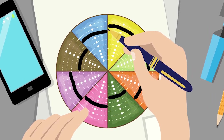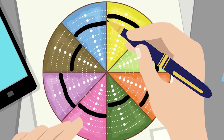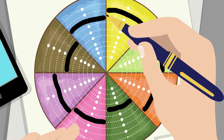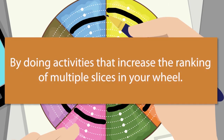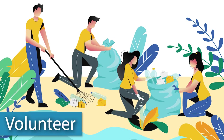There will potentially be more than one slice of the pie ranked lower than the others. If that is the case, there is an interesting and easy way to increase the ranking of multiple slices simultaneously — by doing activities that increase multiple slices at once. For example: volunteer. Volunteering will increase your friends slice, personal growth, and fun, and who knows, maybe you'll even find a romantic partner.